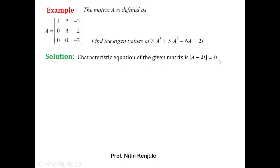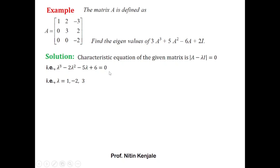Let us first find the eigenvalues of A. The characteristic equation of matrix A is given by det(A − λI) = 0. Using the trick mentioned in my previous video, you can directly write the characteristic equation as λ³ − 2λ² − 5λ + 6 = 0. Solving this equation you will get roots as 1, −2, and 3. So these are the eigenvalues of matrix A.